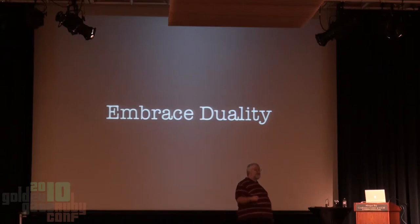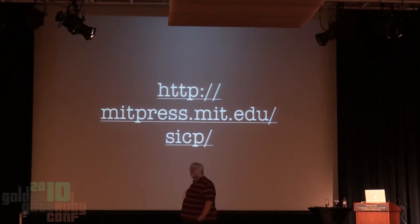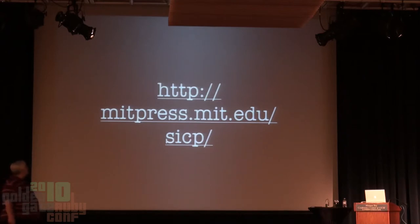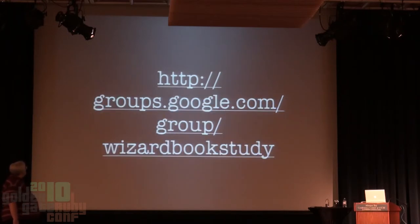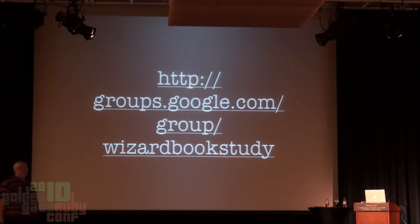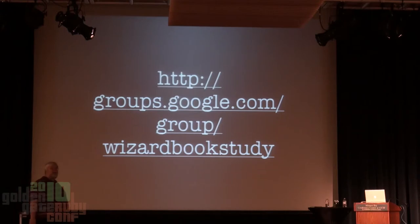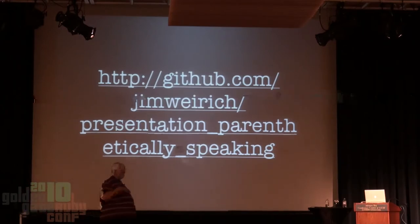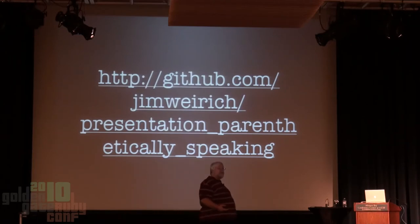Finally, embrace duality. There are things that we cannot describe in a singular, precise manner—sometimes they act like this, sometimes they act like that. Recognizing duality is a wonderful thing. The whole Structure and Interpretation of Computer Programs, SICP, is available online. There's an HTML version, PDF versions, and EPUB versions, so if you want to put it on your iPad or Kindle that's pretty easy to do. Our study group is the Wizard Book Study on Google Groups—not very active right now, but if you want to stir something up someone will be glad to talk to you. This whole presentation is up on GitHub, and all the source code I used in my examples is also in that project.